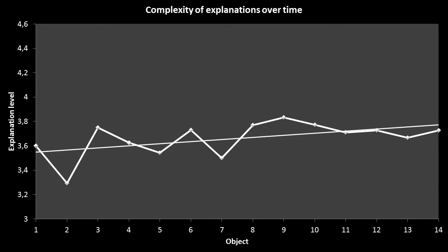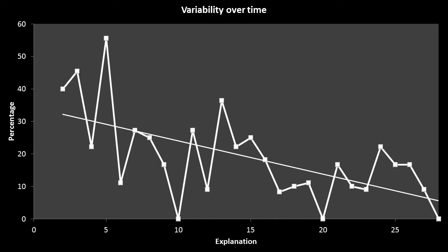Looking at group averages over time for the 14 different objects, we calculated the average complexity level. We saw variability but also an increase in complexity level overall. So with 14 objects, two explanations per object, in about 10 minutes total, children aged 4 to 6 were capable of improving their explanations in just 10 minutes. We also looked at variability over time across those 10 minutes and 14 objects, and noticed a clear decrease in variability — the percentage of change occurring between each explanation decreased steadily.